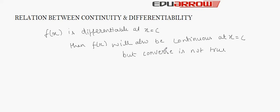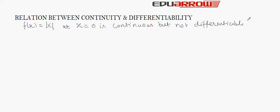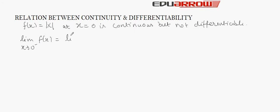Let us see this through an example. In this question, it is given that there is a function f(x) equal to modulus of x, and we have to prove that it is continuous at x equal to 0 but not differentiable at x equal to 0. To prove continuity, first we will find out the left-hand limit, that is, limit x tends to 0 negative of f(x), which is equal to limit x tends to 0 negative of modulus of x.